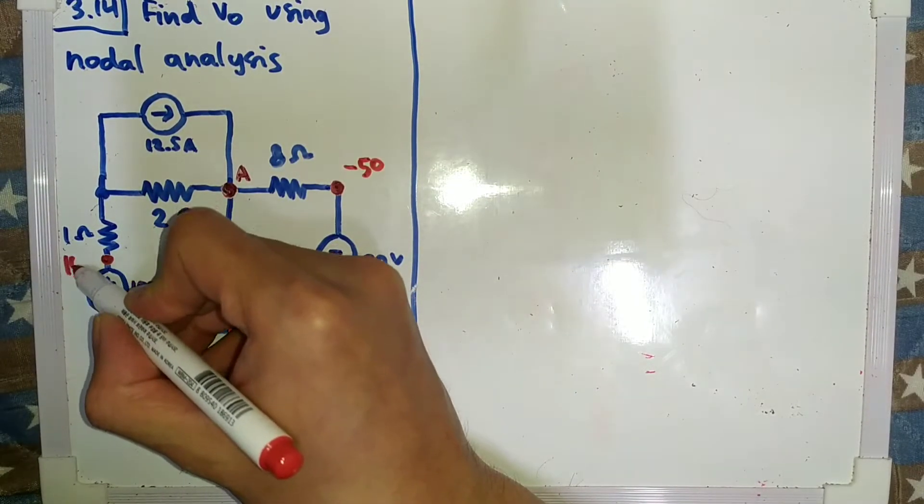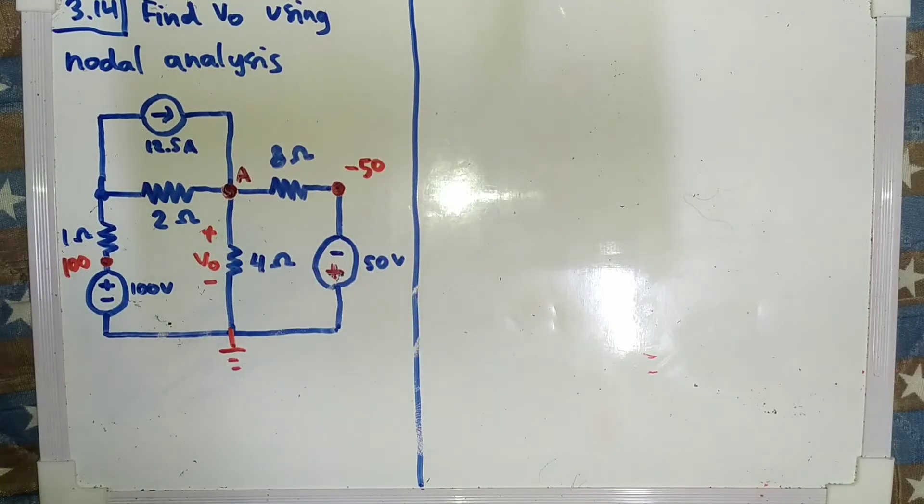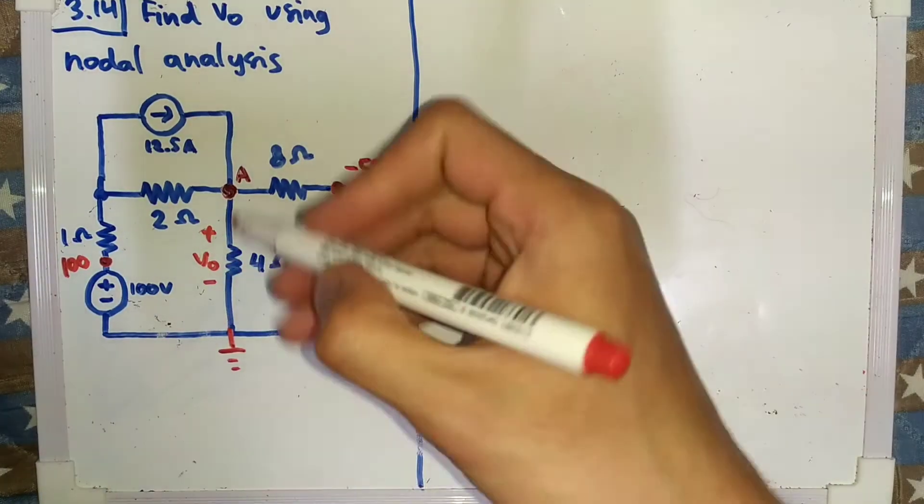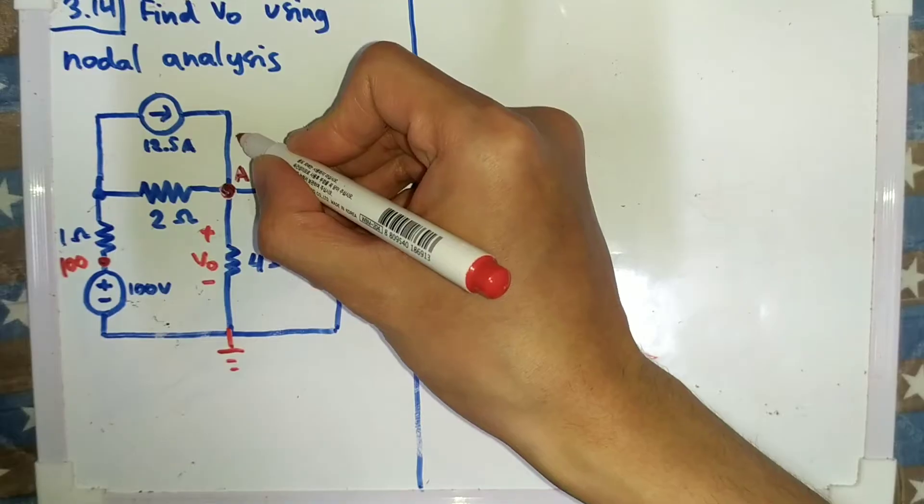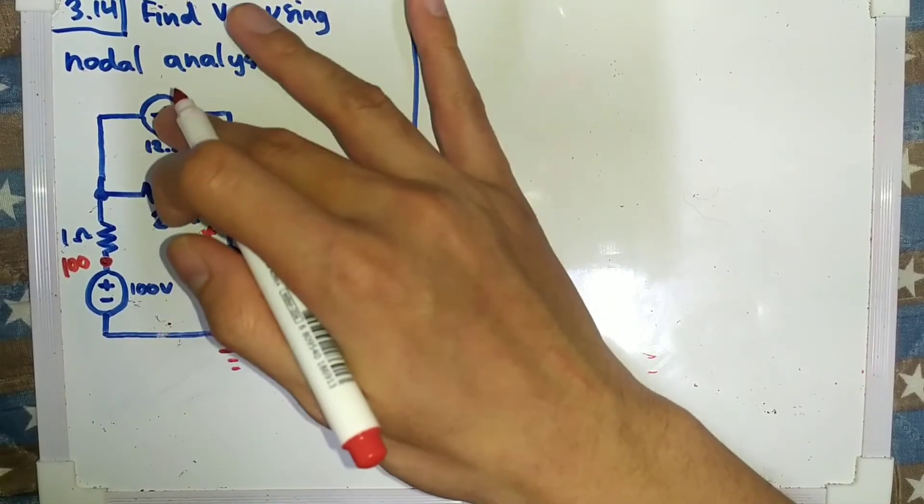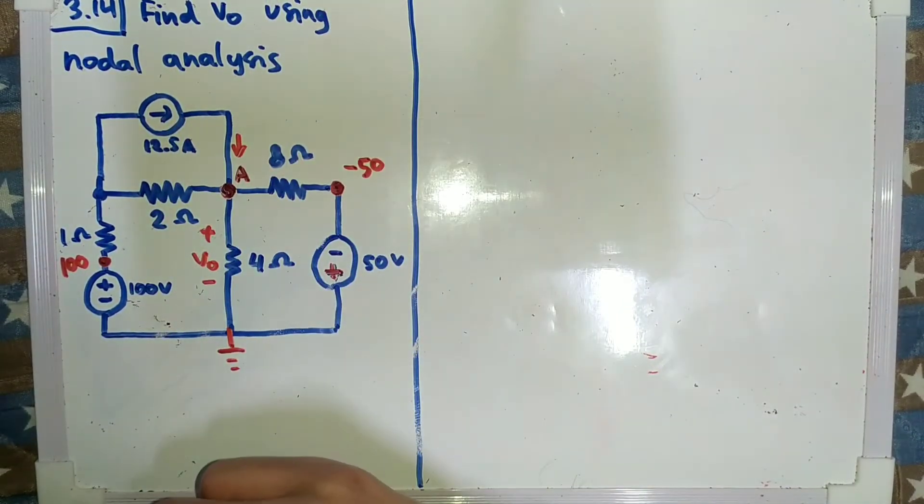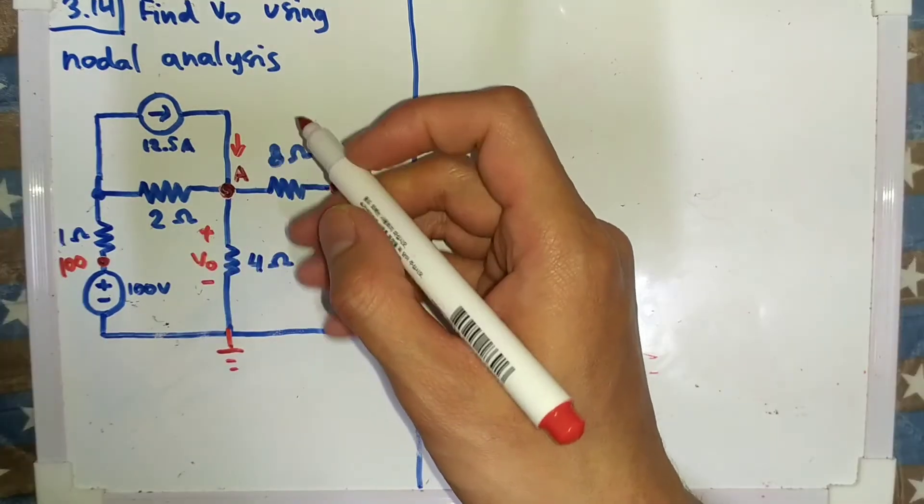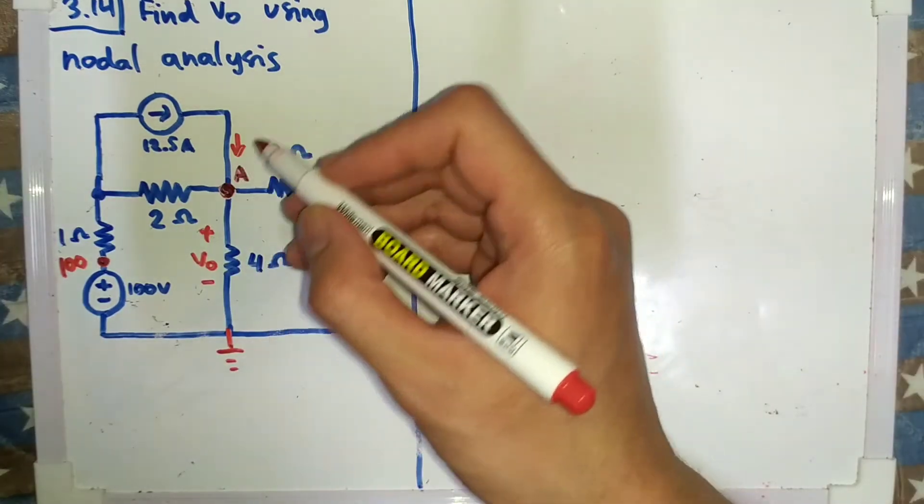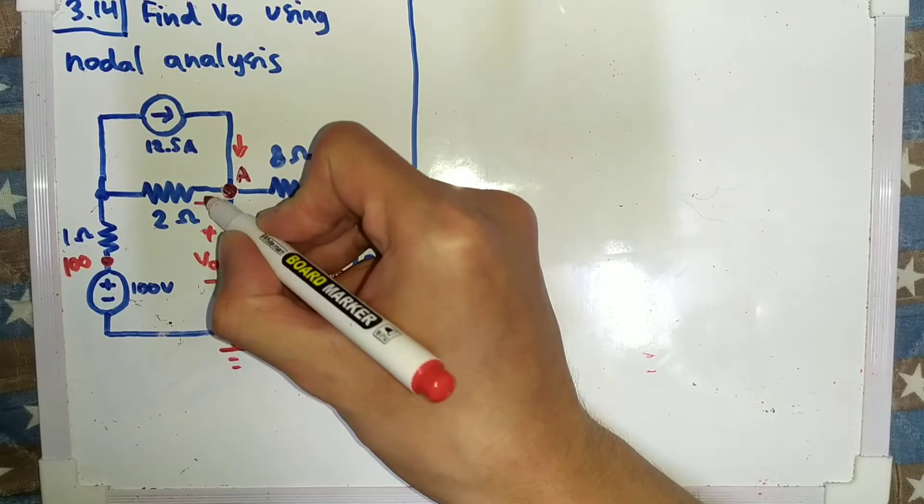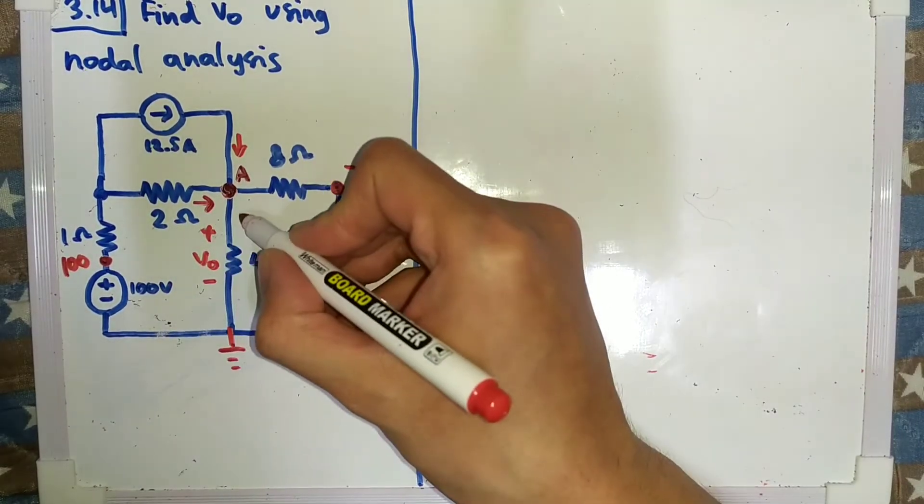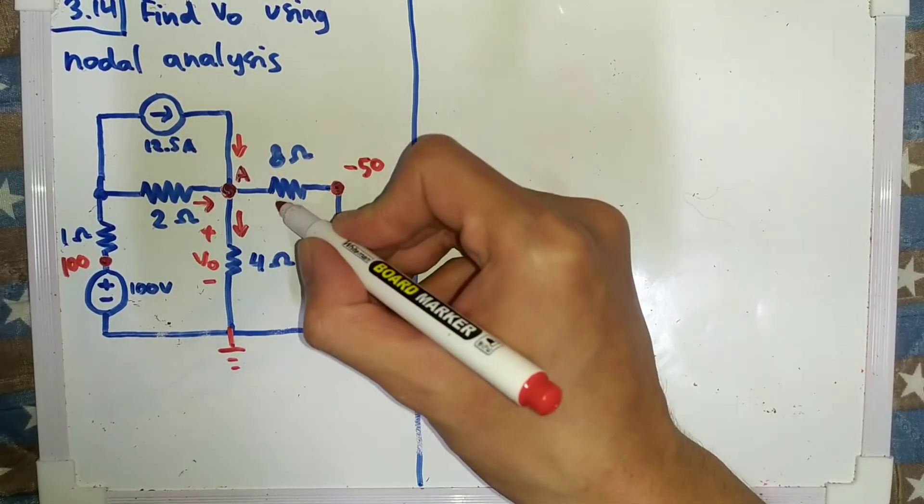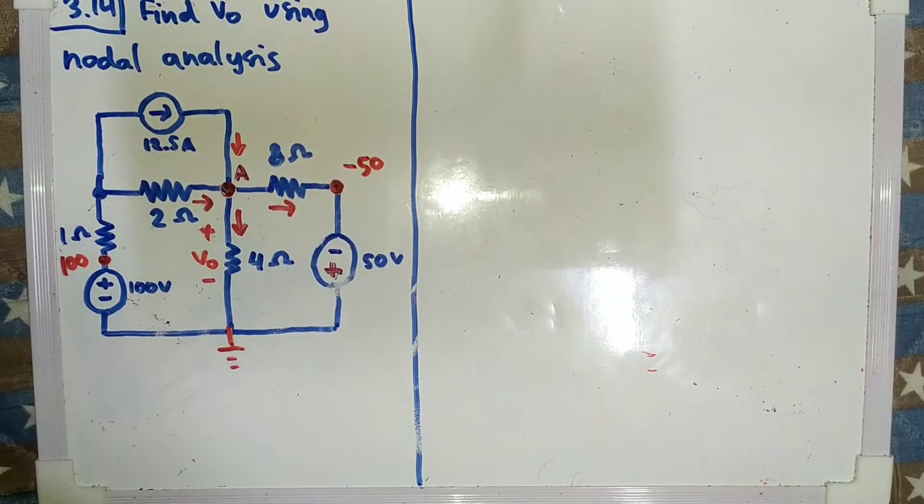We will assume the current that goes in is from here because this is the current source. And then I will assume that this current will go in there and this go there and this go there. It's just an assumption, so you can make the arrows any way, but this is our assumption.